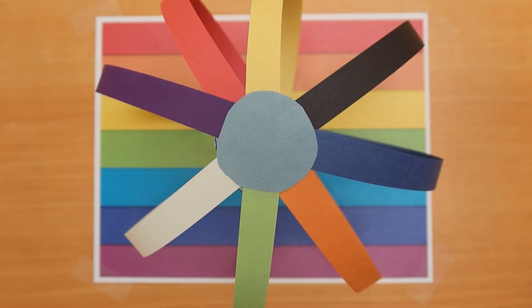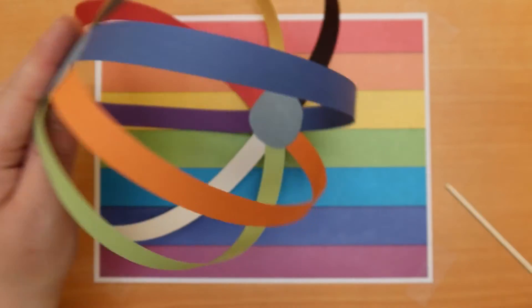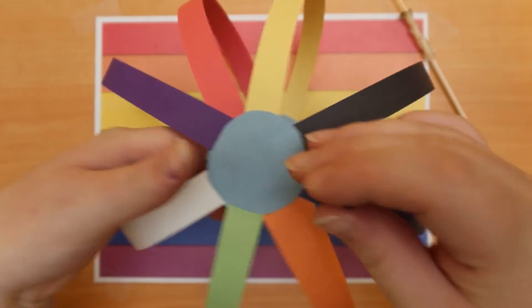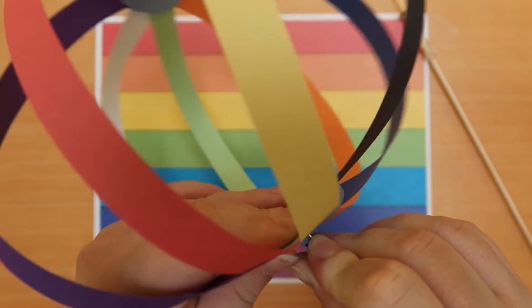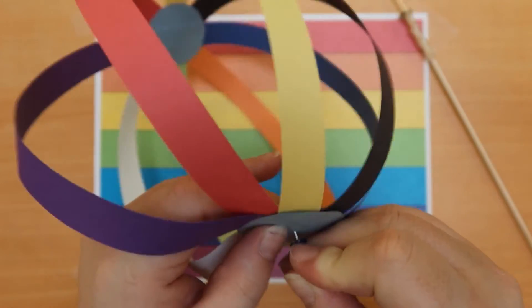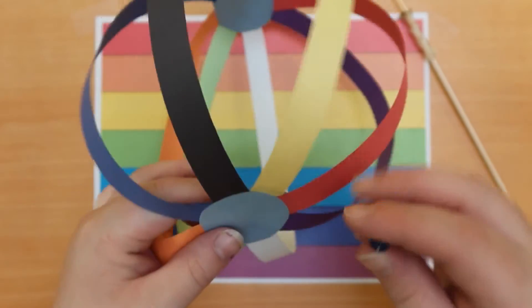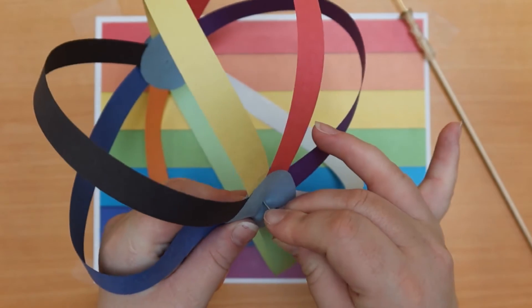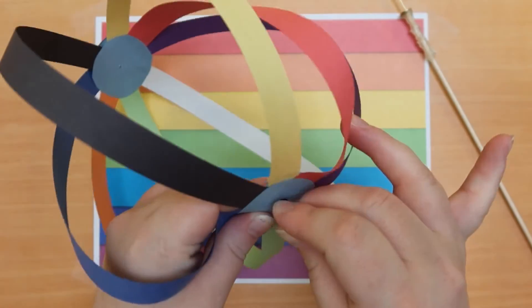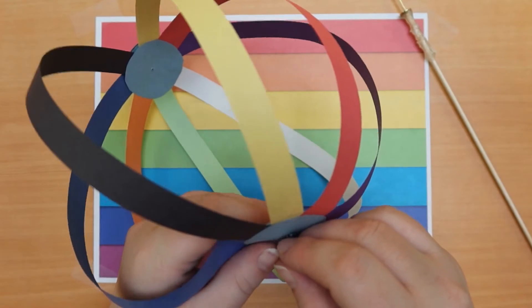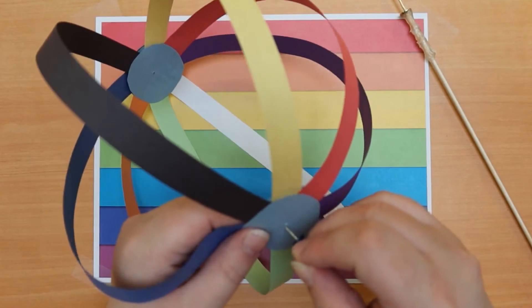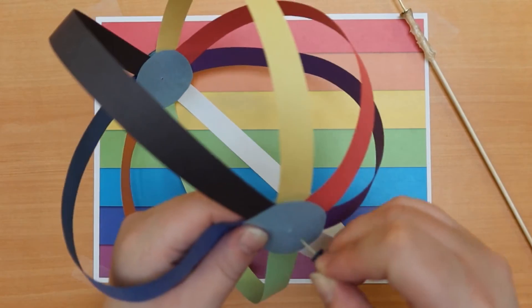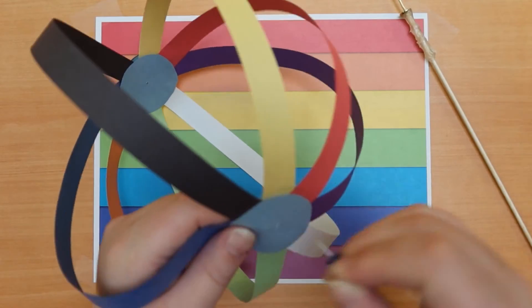Now you will take your wooden dowel and poke it to the center of both of the circles. I am using a thumbtack to help get the hole started. For the bottom you may need to punch a couple of times so the bottom hole is a bit bigger than the top one.